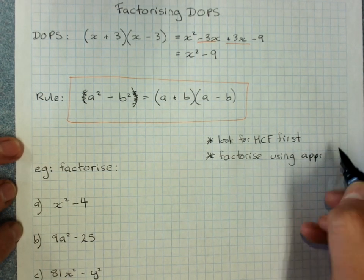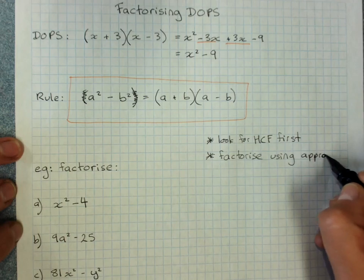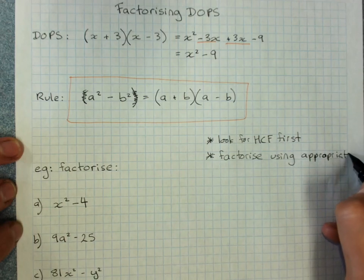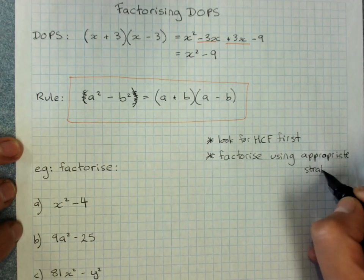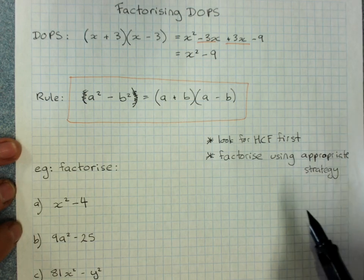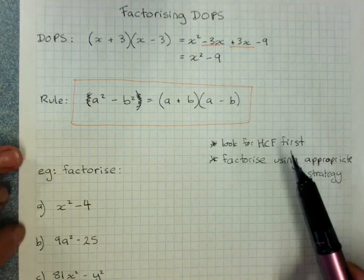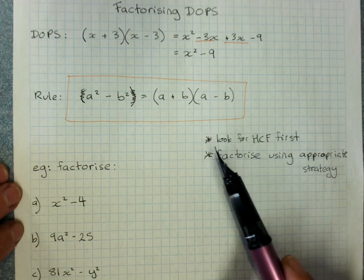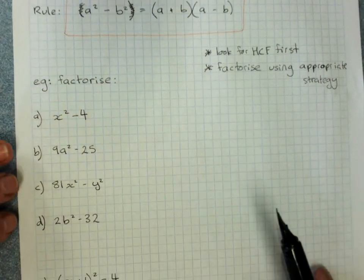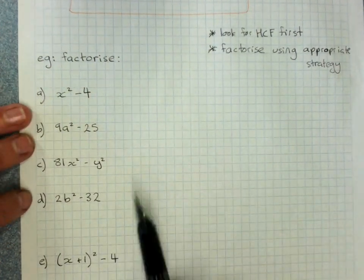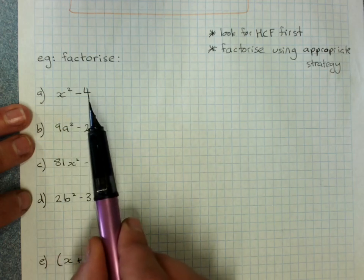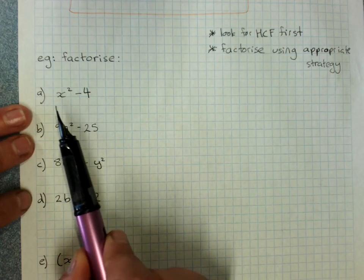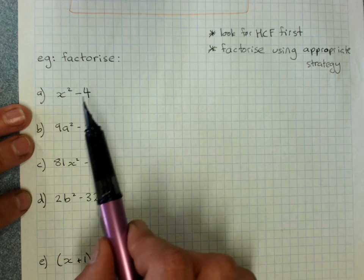And because there's all sorts of different ways of factorizing, appropriate. I'm just leaving it like this. But this works for anything. Always look for a highest common factor first. So factorize these. Check for a HCF, no.